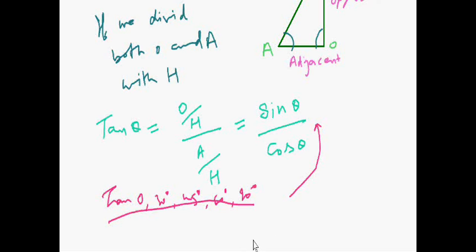sin 30 degree divided by cos 30 degree, sin 45 degree divided by cos 45 degree. The value will be same.